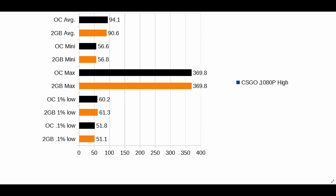CSGO is our next one — running at 1080p on high settings. Average went up to 94.1 from 90.6. The minimum is down slightly at 56.6 versus 56.8 with 2 gigs at 1900 MHz. The maxes are about the same at 369.8. 1% lows went down slightly to 60.2 from 61.3, and the 0.1% low was 51.8 up from 51.1. Since this was live gameplay it's hard to keep everything exactly the same each run.